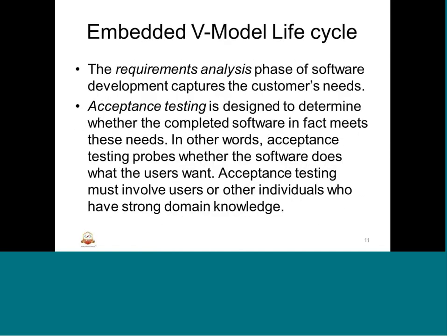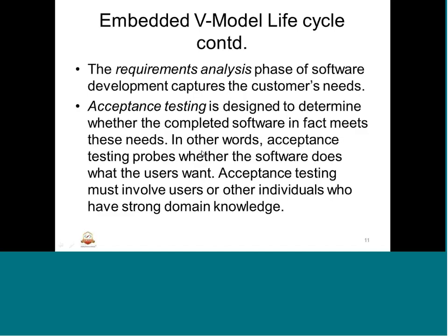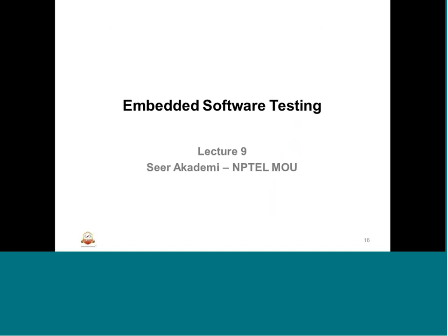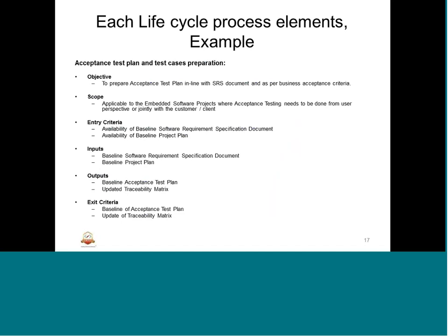Each life cycle element has its own process with a defined objective, scope, entry, inputs, outputs, and exits. In an earlier session we studied each of these process items using the example of a test plan, where we identified the objective as preparing a test plan, scope as the project test plan, inputs as the project plan, outputs as the baseline test plan and traceability, and exit as the outcome of testing preparation.